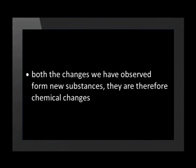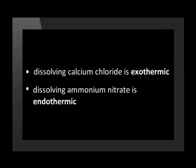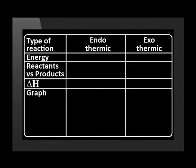Now to summarize. Both changes we have observed form new substances, so the dissolving in water of calcium chloride and ammonium nitrate are both chemical changes — one is exothermic, the other is endothermic. We have established that we have two types of reactions, namely endothermic and exothermic.